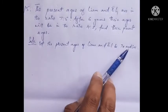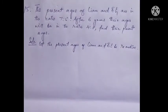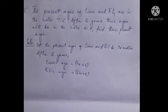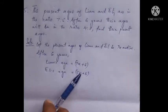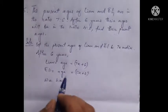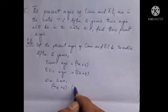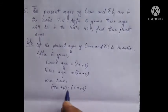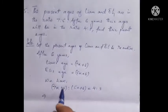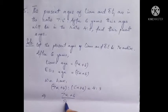The present ages of Liam and Eli can be represented as 7x and 5x. After 6 years, Liam's age will be 7x plus 6, and Eli's age will be 5x plus 6. These will be in the ratio 4 is to 3. So we can write: 7x plus 6 over 5x plus 6 equals 4 over 3.